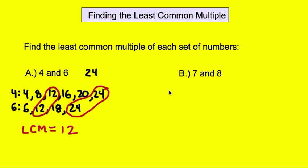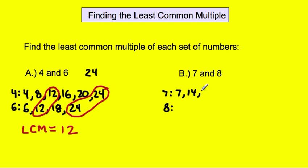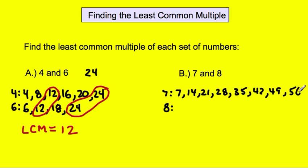Now let's do another example for 7 and 8. Here is the number 7, we write the number 8, and then we're going to list out the multiples all the way up to 56, because it cannot be any more than 8 times 7. So we've got 7, 14, 21, 28, 35, 42, 49, and then 56.